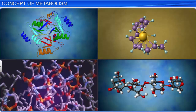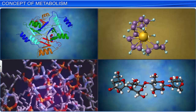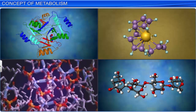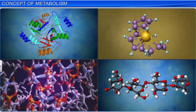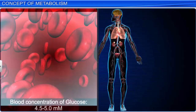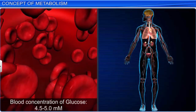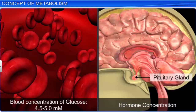Thousands of metabolites or biomolecules are present in living organisms, each with a definite concentration. For example, the blood concentration of glucose in a normal healthy individual is 4.5 to 5.0 millimolars, while that of hormones is measured in nanograms per milliliter.